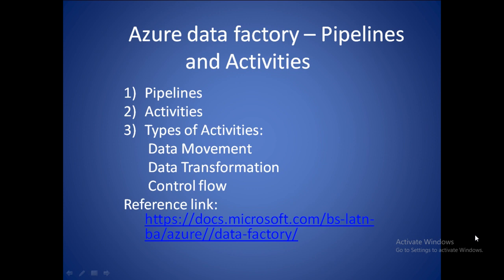Control flow is when you extract data and apply conditional logic — for example, moving data to a specific location based on a condition. If the condition is true, move to this location; if it is false, move to another location. This kind of conditional-based expression is handled in the control flow activity.